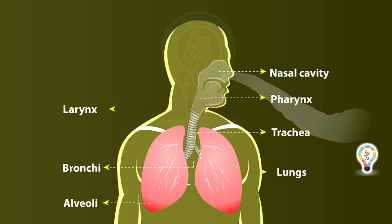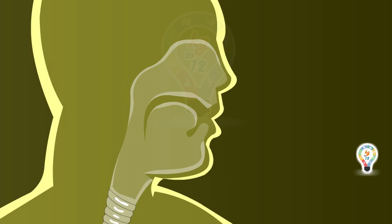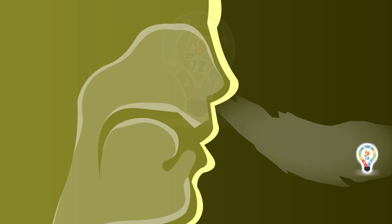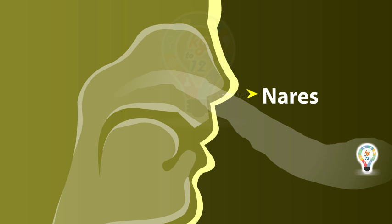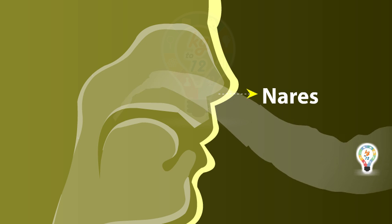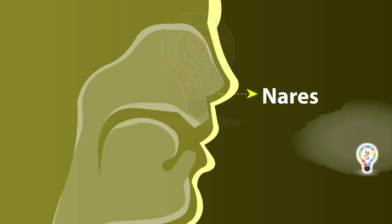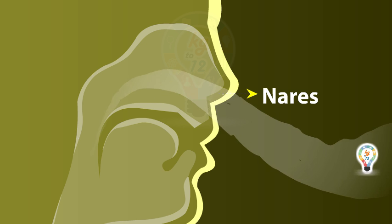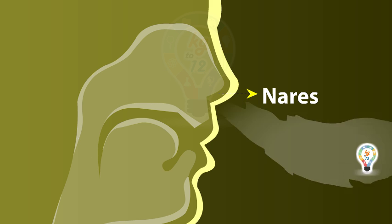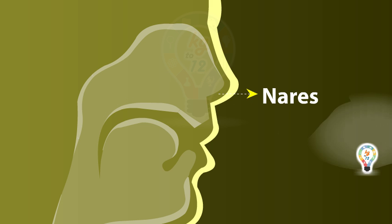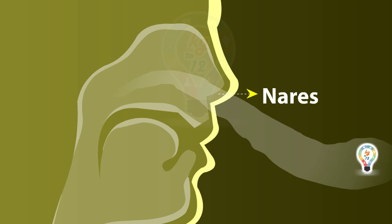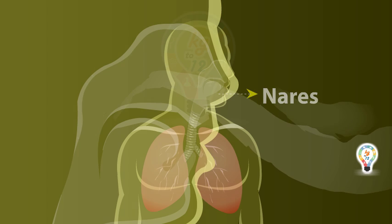The nostrils are the opening to the nose. The nasal cavity is lined with cilia, mucous membranes, and blood capillaries. The air is filtered by cilia, moistened by mucous membranes, and warmed by blood.